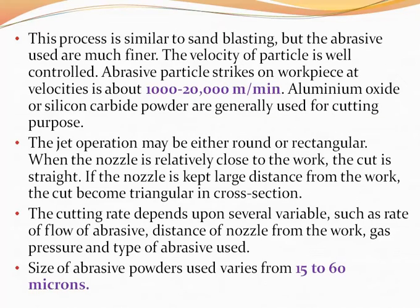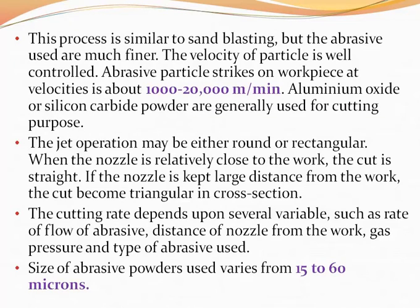When the nozzle is close to the workpiece the cut is straight, and as we increase the distance the cut becomes triangular in shape. The cutting rate depends upon several variables such as rate of flow of abrasive, distance of nozzle from the work, gas pressure, and type of abrasive used. The size of abrasive powder used varies from 15 to 60 microns. Aluminum oxide and silicon carbide powder are generally used for cutting purposes.